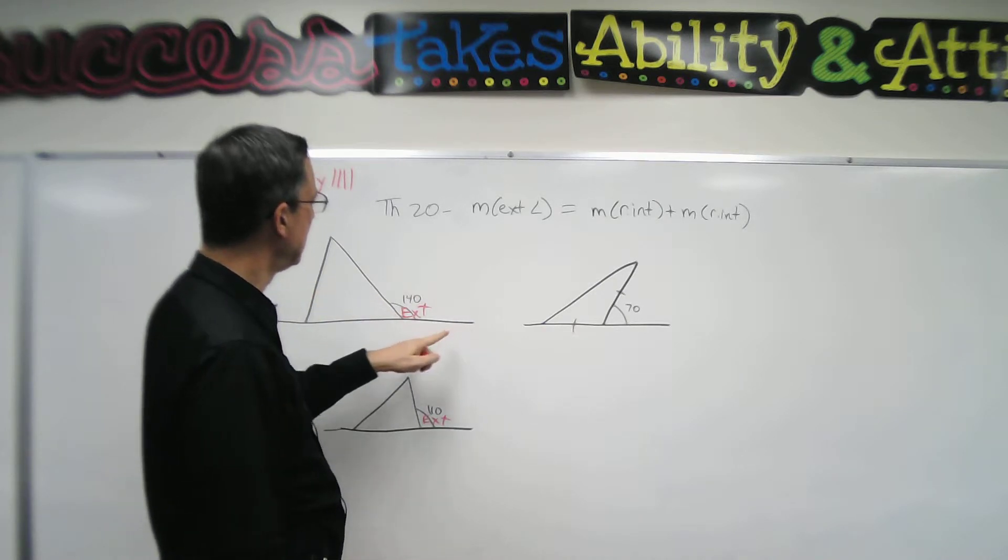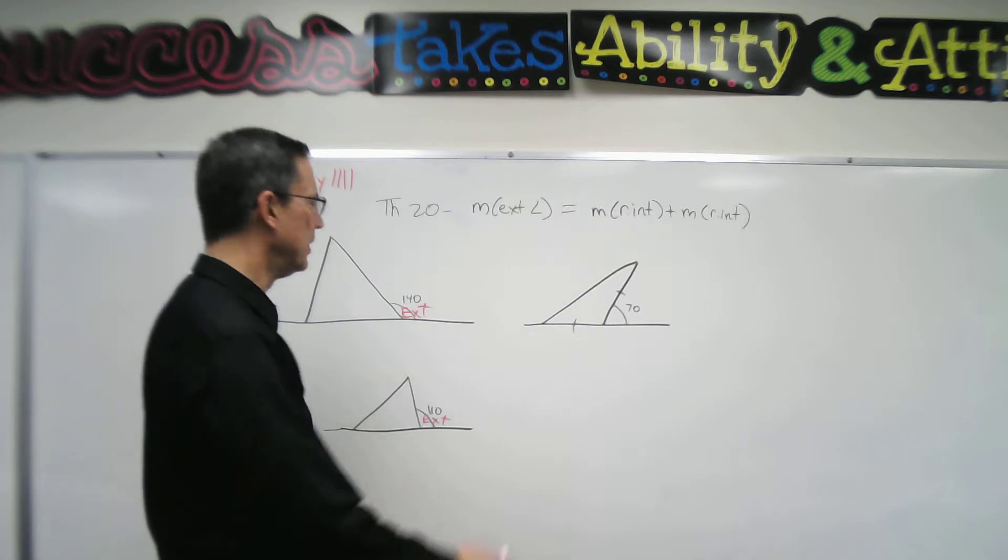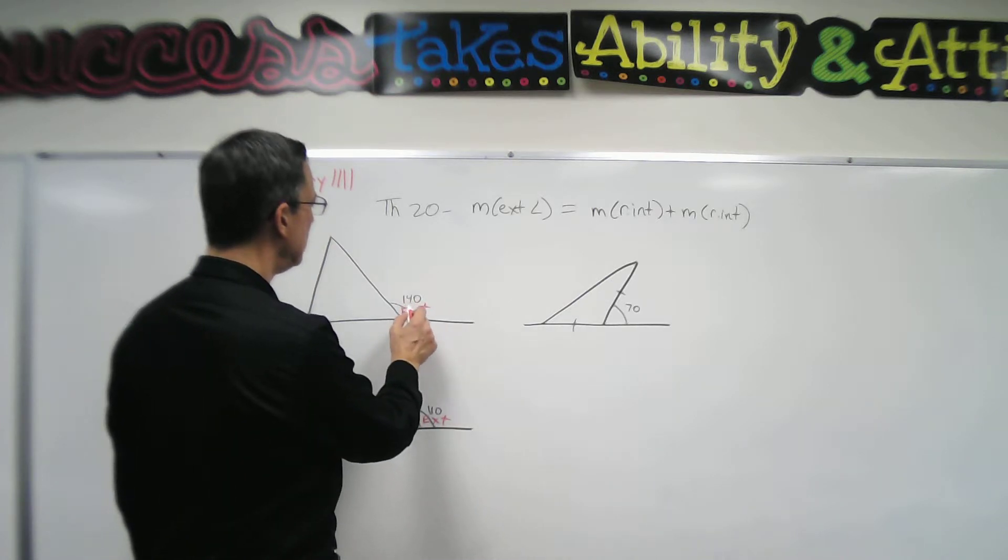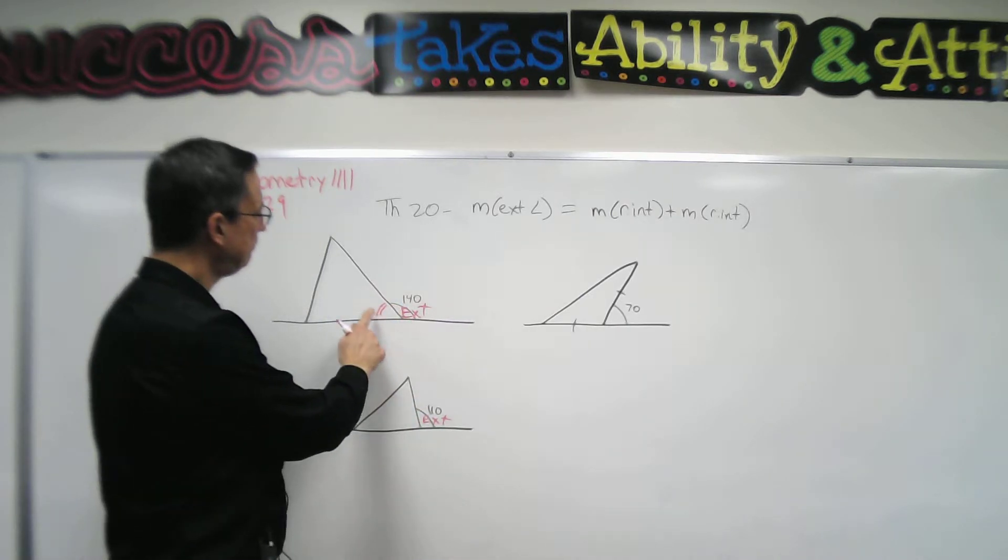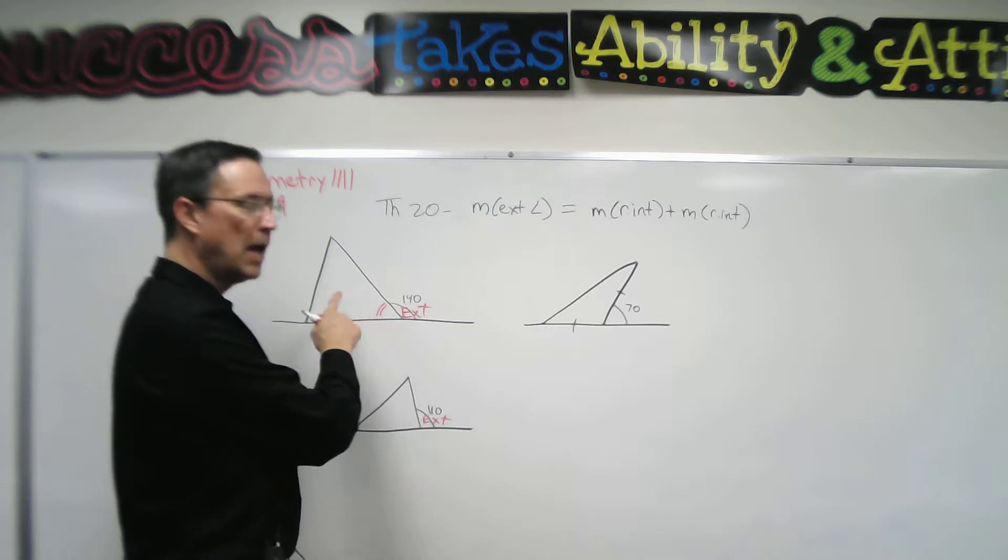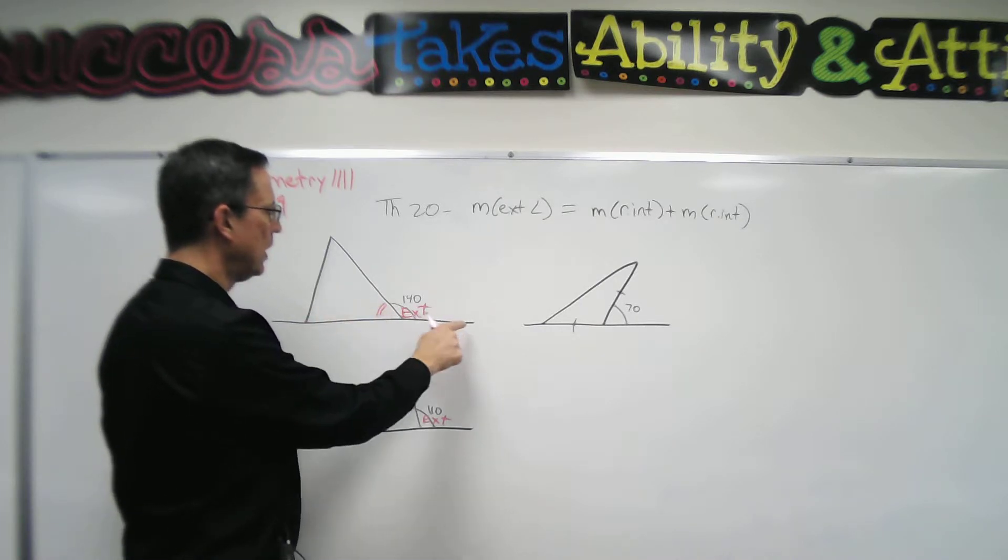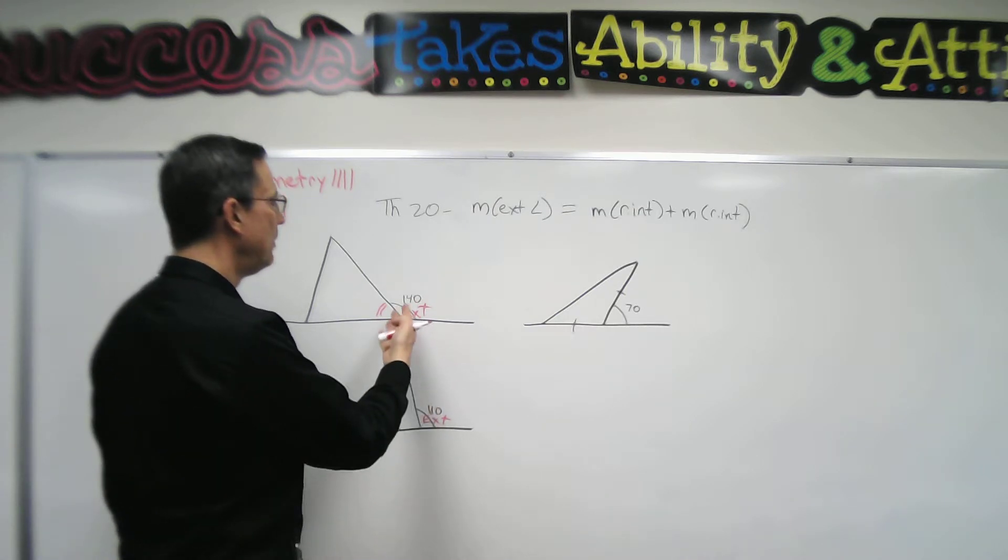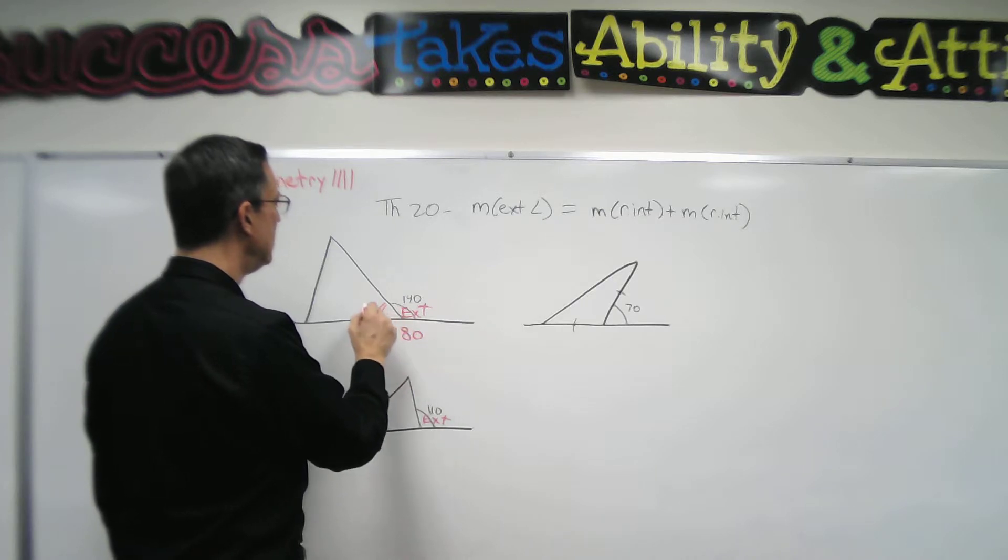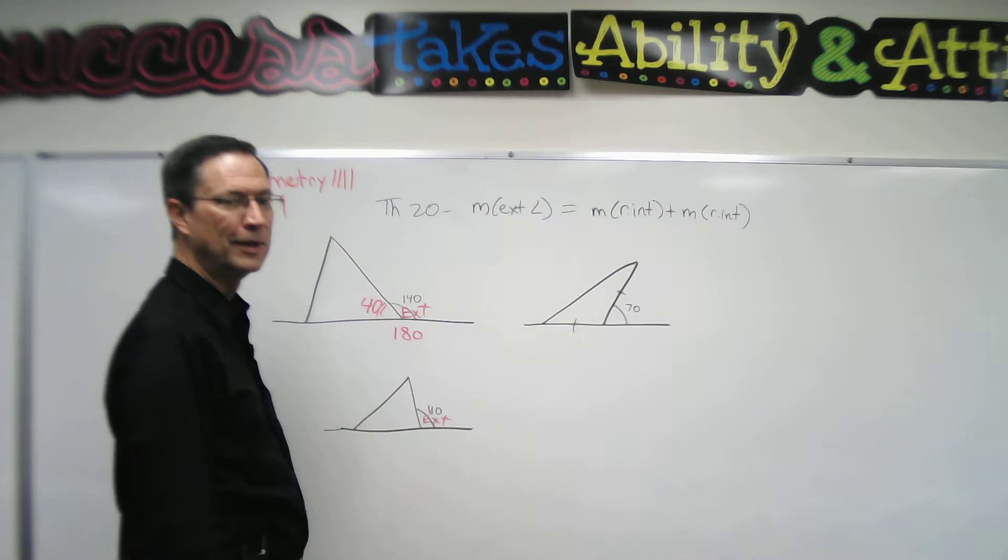So there is this line extending out here and this is 140 degrees. Now let's think about this. If this is 140 degrees, how many degrees would this angle in here have to be? Well, it would have to be, because it equals a straight line, there's only two angles here. So we say they are supplementary, correct? They're supplementary, that adds up to 180 degrees. So I know that this has to be 40 degrees in here.